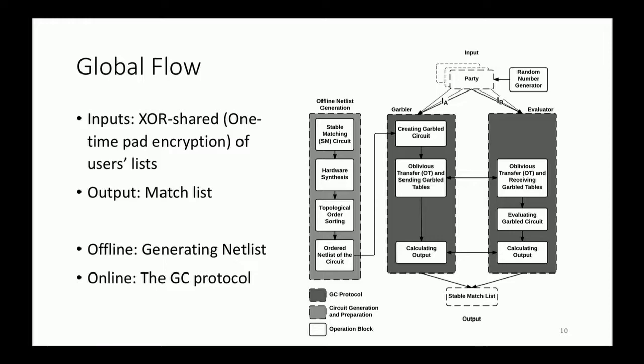This is an input to the GC protocol that is run by two servers, one acting as garbler and one acting as evaluator. These stages here are offline and they have to be performed only once. And these building blocks here are the description of the GC protocol that I discussed before: garbling, communication, evaluating, and merging the result.